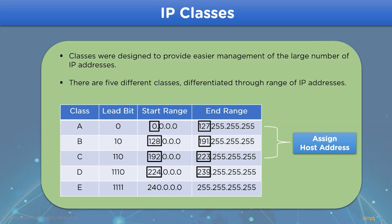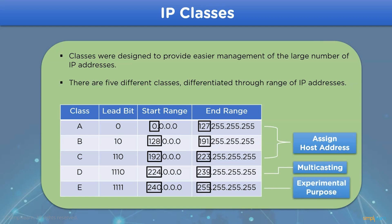Moving on, we have Class D, which is used for multicasting — that means it is used to send multiple signals at the same time from a single host. For example, use in video streaming, where the leading bits are 1, 1, 1, and 0, with network ID ranging from 224 to 239. And then we have Class E, where the IP bits are reserved for research purposes only, with IP addresses ranging from 240 to 255.